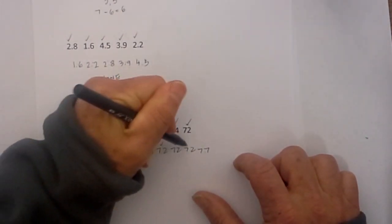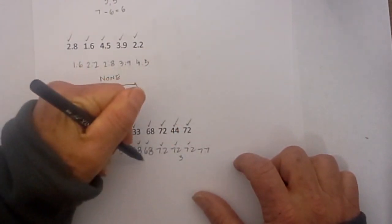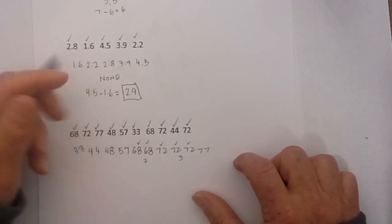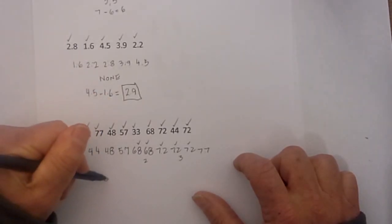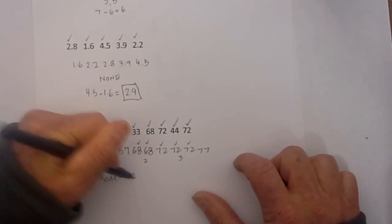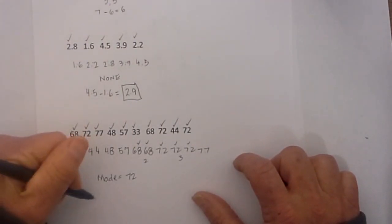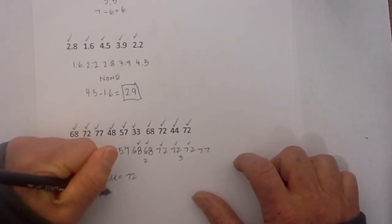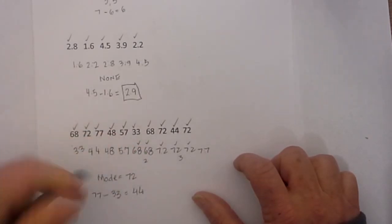But we have 1 2 3 72's, so it looks like the mode will equal 72. And then the range, we take 77 because the range is the difference between the high and the low, minus 33 equals 44.